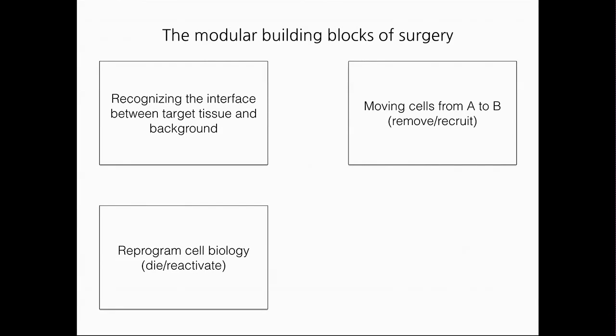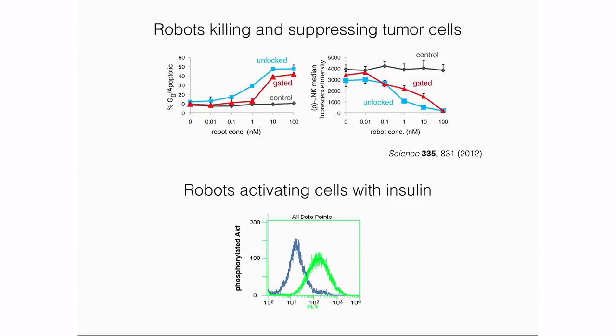The second thing is, once you have the cell, you need to know how to reprogram its biology. You need to tell the cell to either die, or you can recruit cells and tell them to regrow and fix the tissue and regenerate that tissue. So we've already shown in numerous examples, including the one we published two years ago, that when we load the robots with cancer drugs, with proteins, with growth factors, we can tell the cells to either suppress their signaling or die eventually, like you see in the upper figure. Or we can also tell cells to grow, as you can see in the example of robots loaded with insulin.